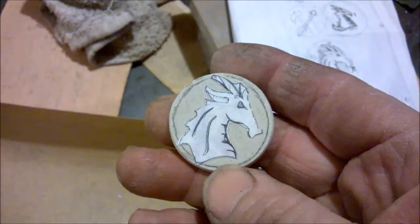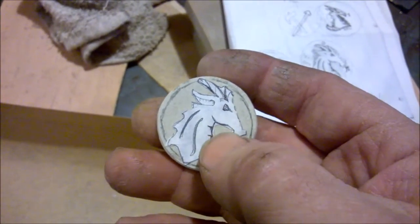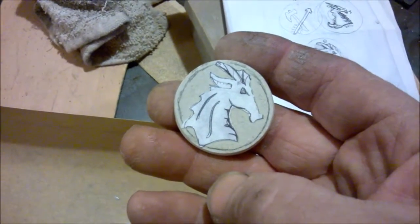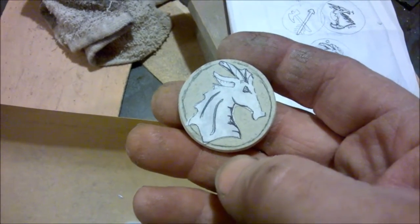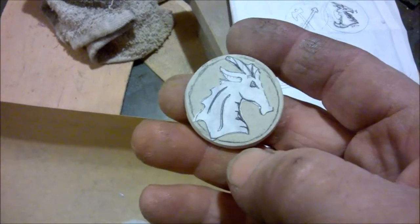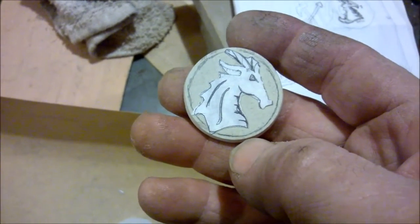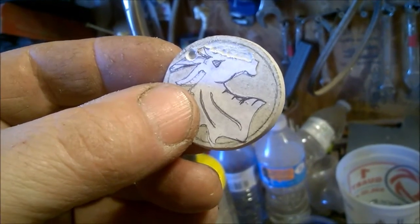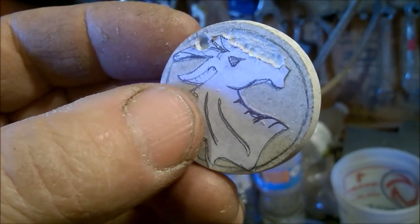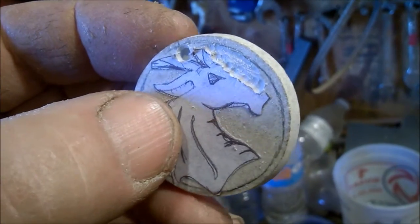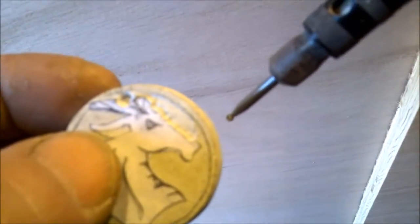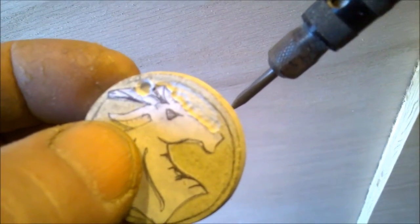Now we're getting ready to use a Dremel tool and we're going to carve out all around the pattern that we just glued on there. That's going to take a little while, probably about half an hour. I've glued the paper on the front and now I'm taking my little Dremel motor tool and carving a recess into that coin.